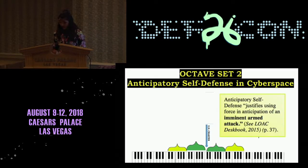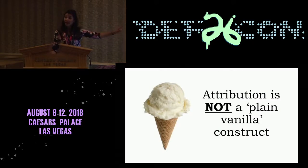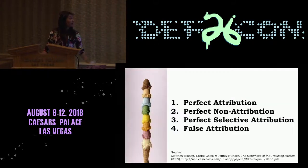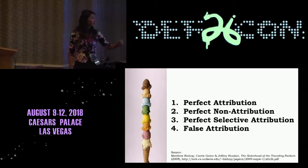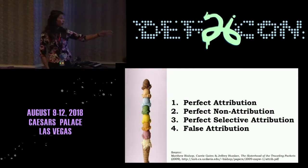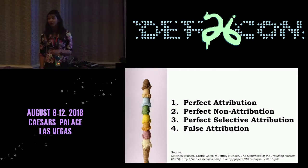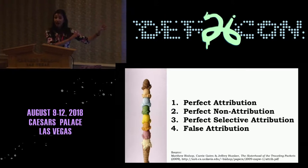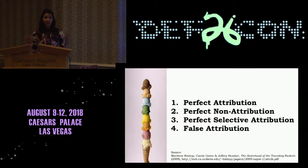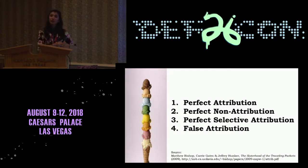The complexities of pairing evidentiary standards with attribution in reality makes this a difficult analysis for the state to do in a timely manner when faced with an imminent attack. I need to pivot to discuss attribution. While this could be a talk in and of itself, there's a misconception I'd like to clear up: attribution is not a plain vanilla construct. It comes in a variety of flavors — frameworks developed by computer science professor Matthew Bishop at UC Davis, along with Terry Gates and Jeffrey Comfort. They proposed four different attribution frameworks.